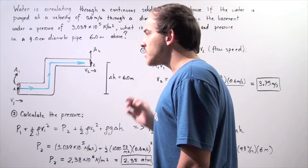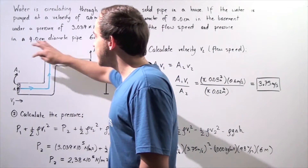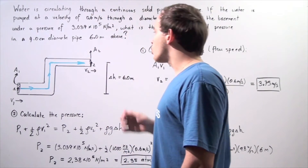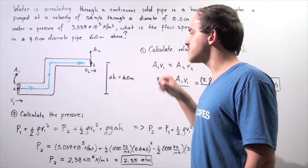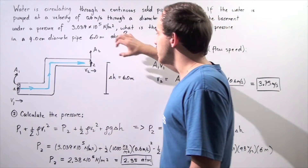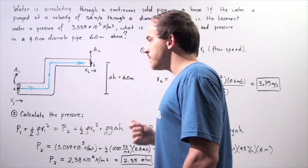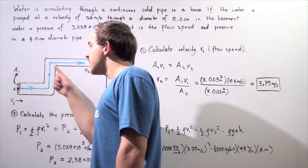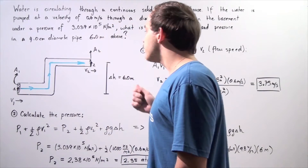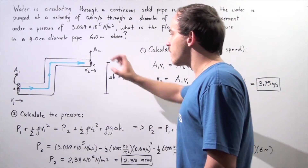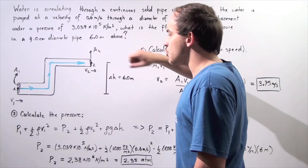The cross-sectional area of the pipe in the basement is A1, and the cross-sectional area of the pipe 6 meters above the basement is A2. The flow speed of the fluid in section 1 is V1, and the flow speed 6 meters above the basement is V2.